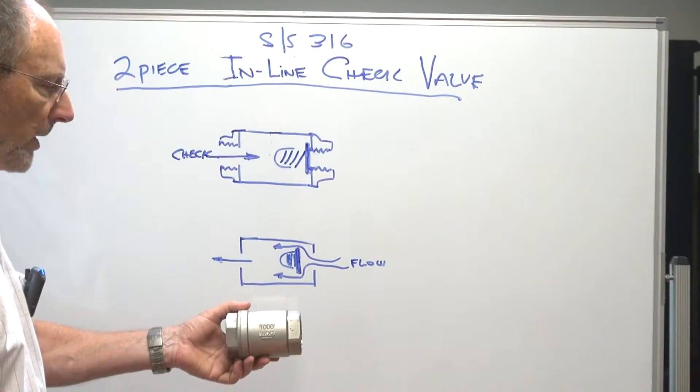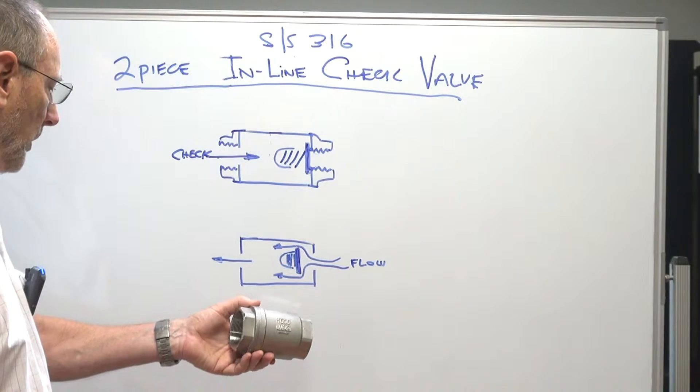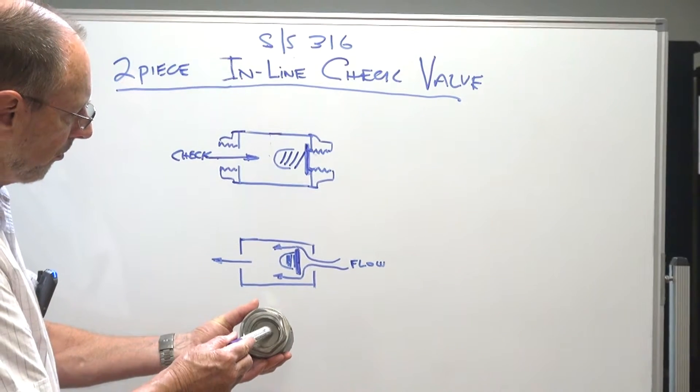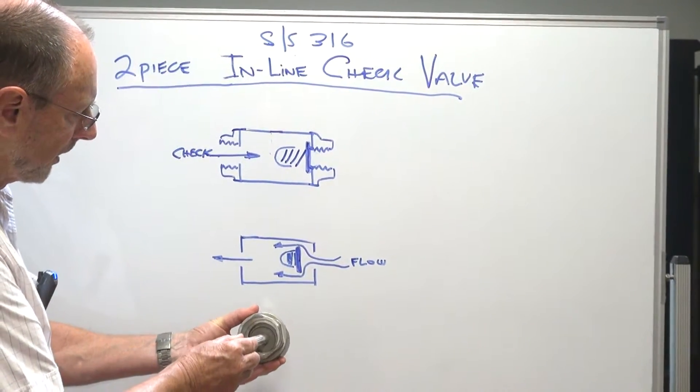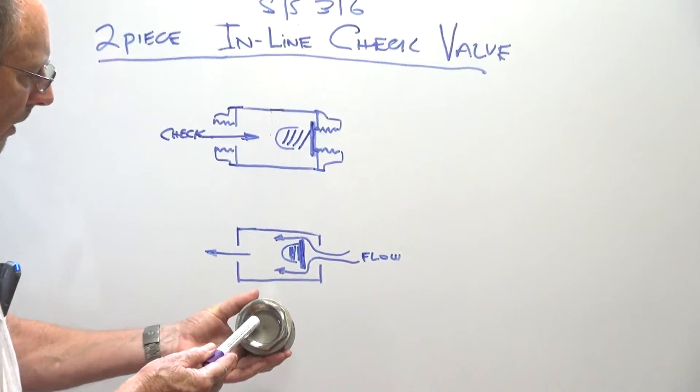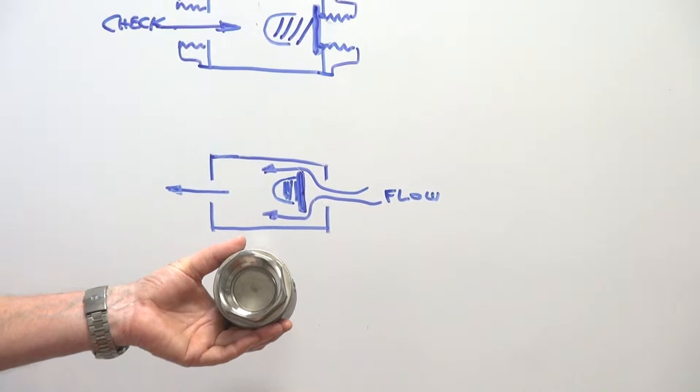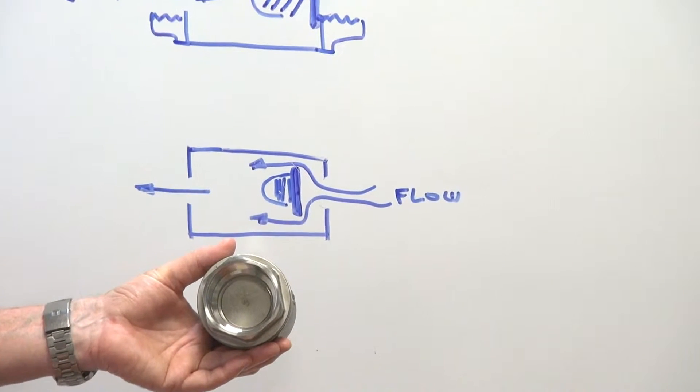It's a 316 stainless steel two-piece inline check valve. We have a metal seat here, you can see that, which is spring-loaded against a metal face. There's no PTFE or anything like that, so it can accommodate heat, steam, petrochemical, and other applications.